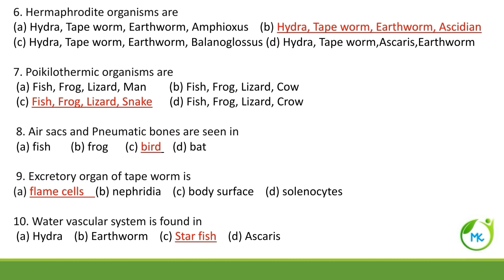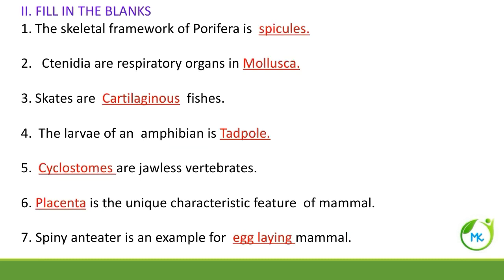Air sacs and pneumatic bones are present in — air sacs and pneumatic bones are characteristic features of birds. The excretory organ of tapeworm is the flame cell. The water vascular system is found in case of starfish.